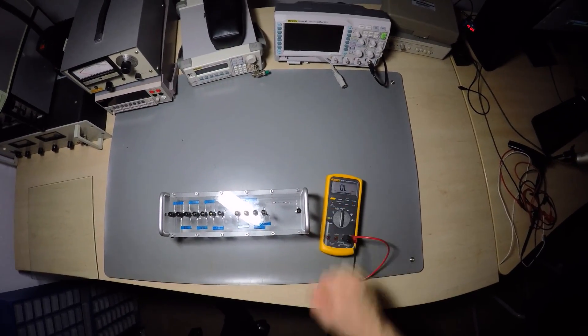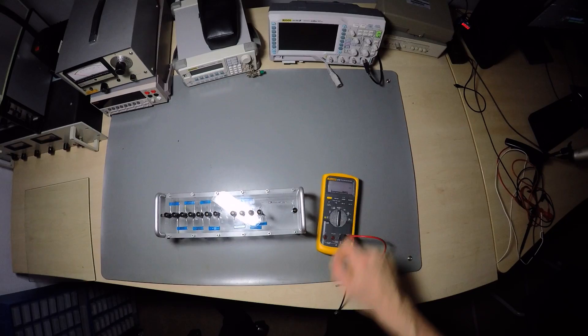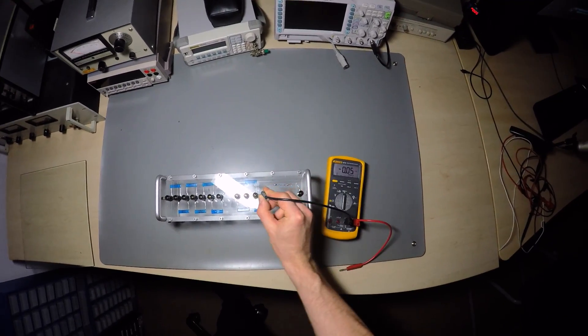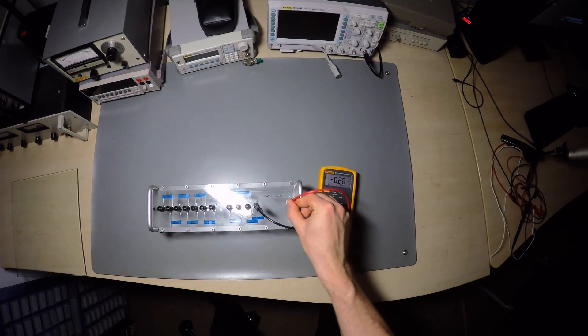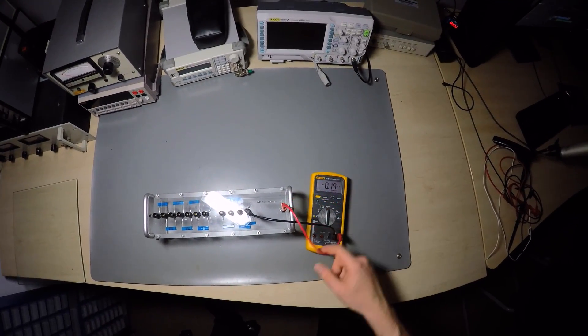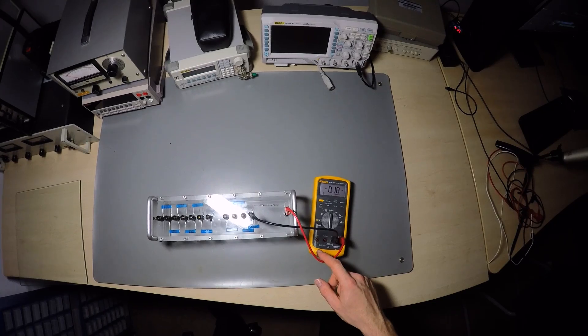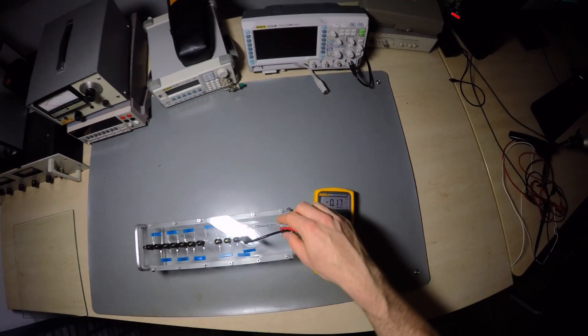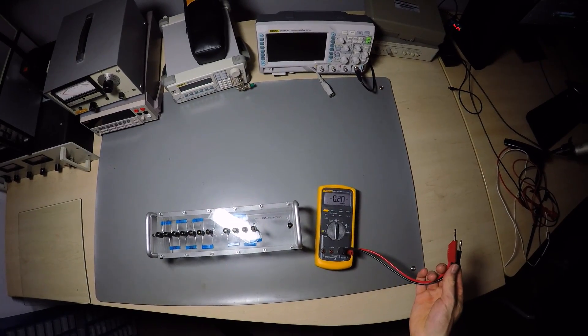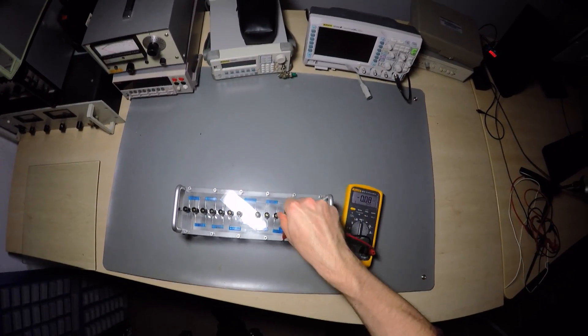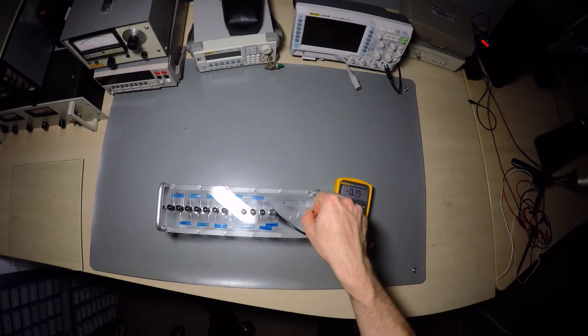So let's try something simpler as suggested by a reddit user. The Fluke 87 DMM has a nanosiemens range with a maximum resolution of 0.01 nanosiemens and coincidentally 100 giga ohms equal 0.01 nanosiemens. But the accuracy in this mode isn't on my side. It's plus or minus one percent plus 10 counts. So this reading could mean anything between 10 giga ohms and open circuit. Not helpful at all.